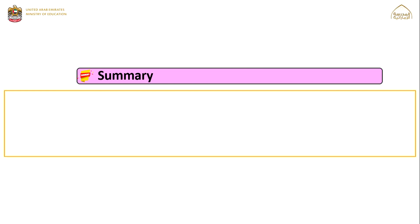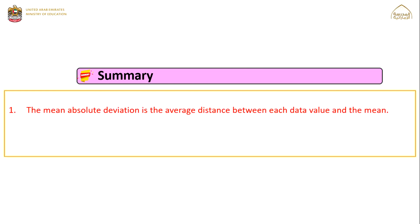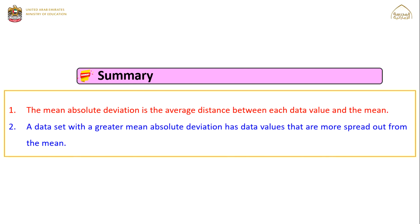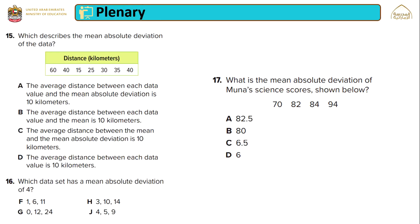We have learned today that the mean absolute deviation is the average distance between each data value and the mean. A data set with a greater mean absolute deviation has data values that are more spread out from the mean.